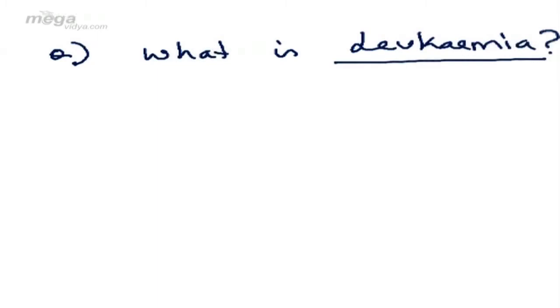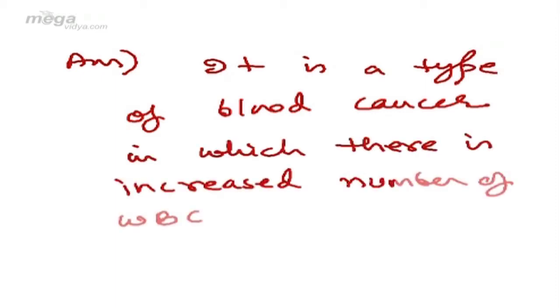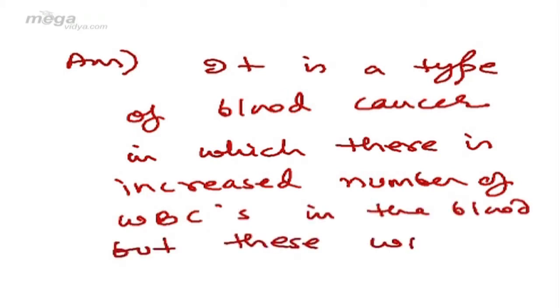If I ask you what is leukemia? Answer: it is a type of blood cancer in which there is increased number of WBCs in the blood. But these WBCs are immature, therefore they are of no use.